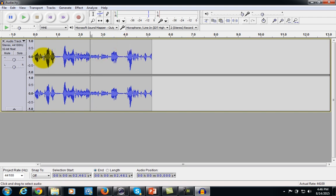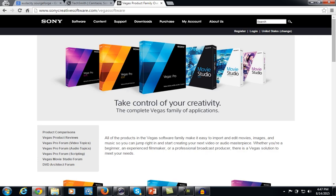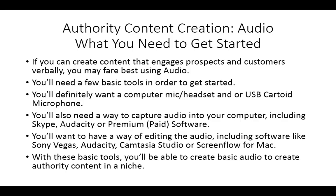You can take portions out that you don't want. The premium programs are much better for editing — Camtasia, ScreenFlow, and even another program called Sony Vegas. These programs can be a little pricey, but you can often look for them on Amazon or eBay where they'll be a lot less expensive. Once you have these basic tools, you will be able to create basic audio authority content in a niche. If you already have your content source — your knowledge, your experience, or private label rights content — all you'll need to do is start recording and make sure it's edited for whatever medium you want to put it in.